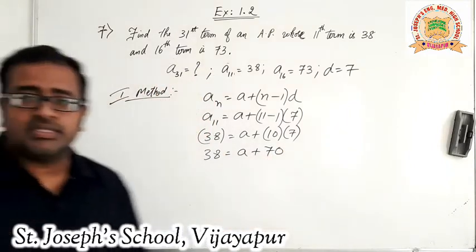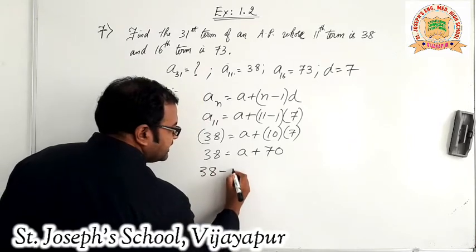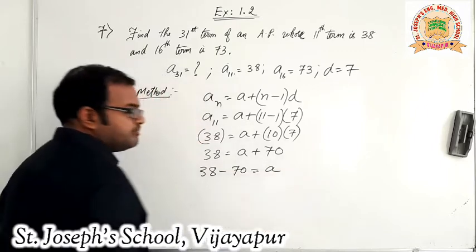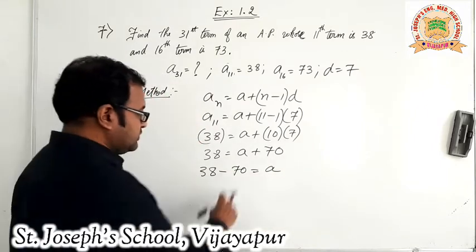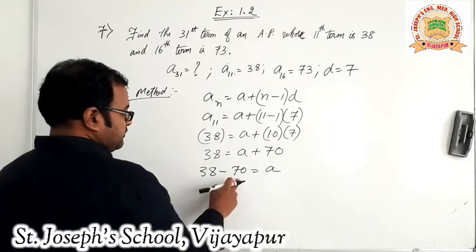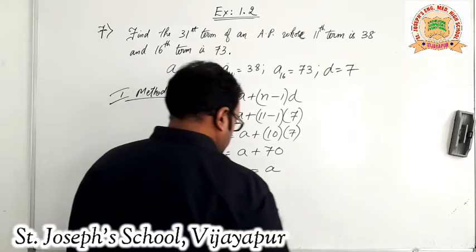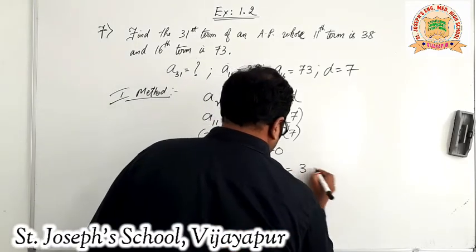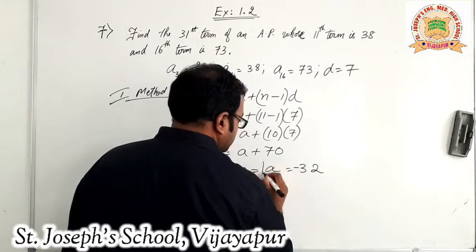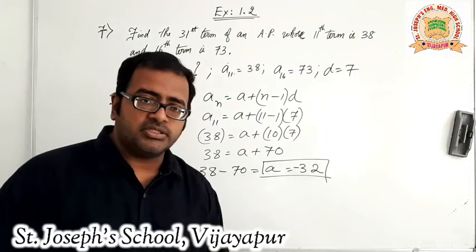70 comes to the other side and becomes minus 70. So A equals 38 minus 70. 70 is the bigger number, so we subtract: 70 minus 38 is 32, and since the bigger number is negative, A is equal to minus 32.